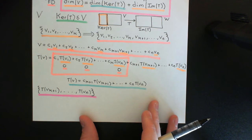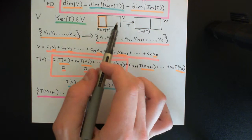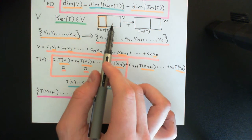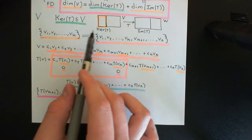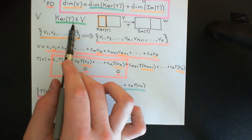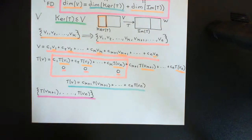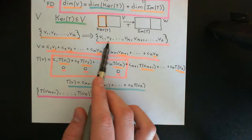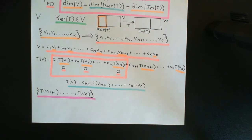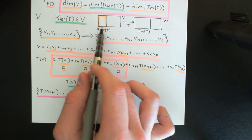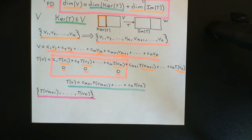So what are our tactics for proving this? What we've done so far is devise a clever basis for our domain vector space. We've devised a basis which is an extension of a basis for the kernel of T, which is a subspace of our vector space capital V. We started with a basis for the kernel and then extended it up to a basis for the entire vector space, which we can always do because any linearly independent set can be extended to form a basis.